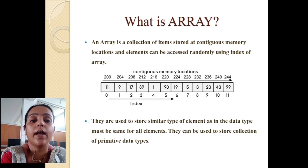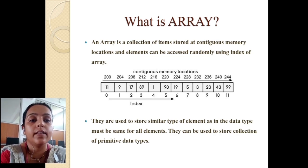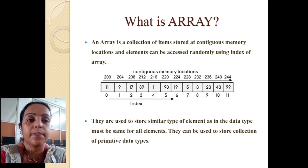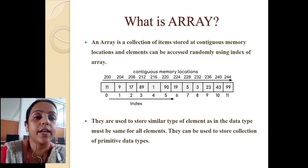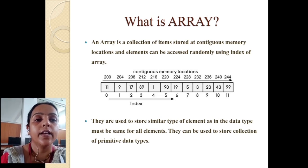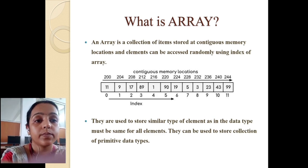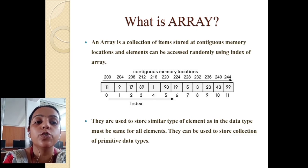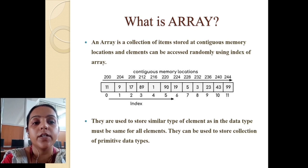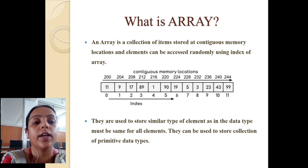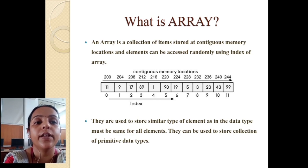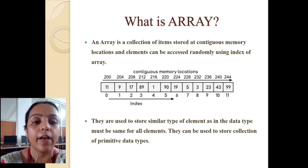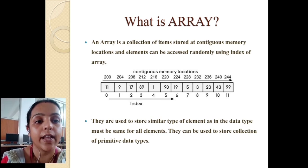In this diagram you can see boxes containing values like 11, 9, 17, and 89 — these are the values stored in the array, and below them are the index values. The data type must be the same for all elements. Arrays can be used to store a collection of primitive data types such as character, integer, float, and double. Any variable has one data type, and all elements in the array share the same data type.